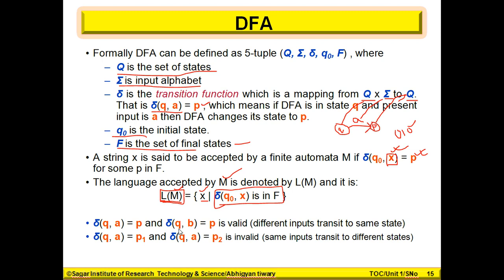For the transition function: delta(Q, A) = P and delta(Q, B) = P is valid. So from state Q, after reading A we move to P, and from state Q after reading B we can also move to P — we just draw a self-loop or arc back to the same state P. Both A and B can lead to the same state P — that is valid.